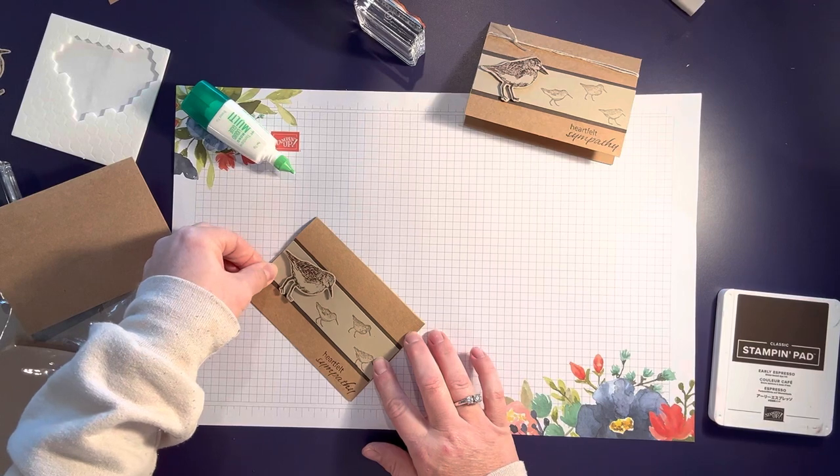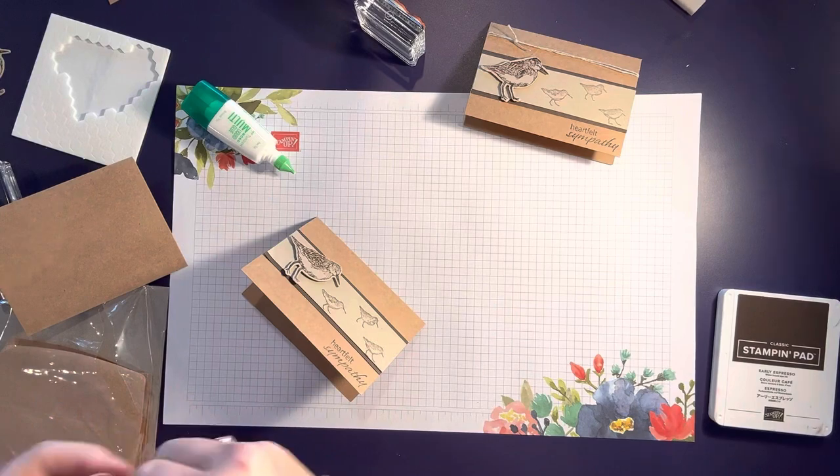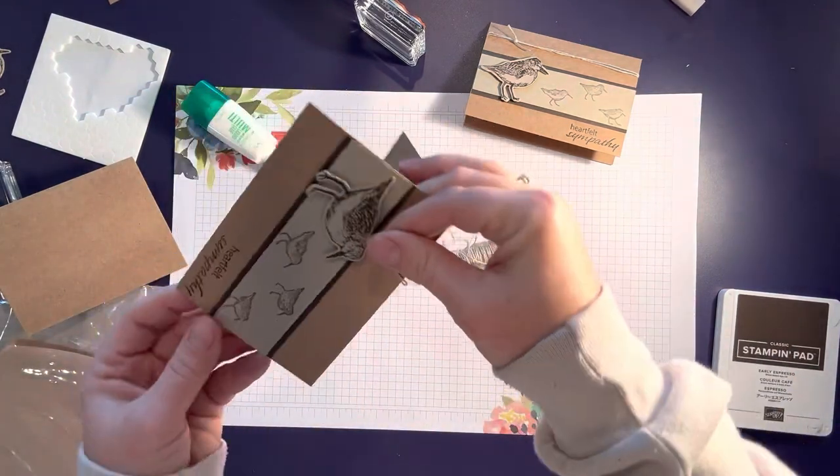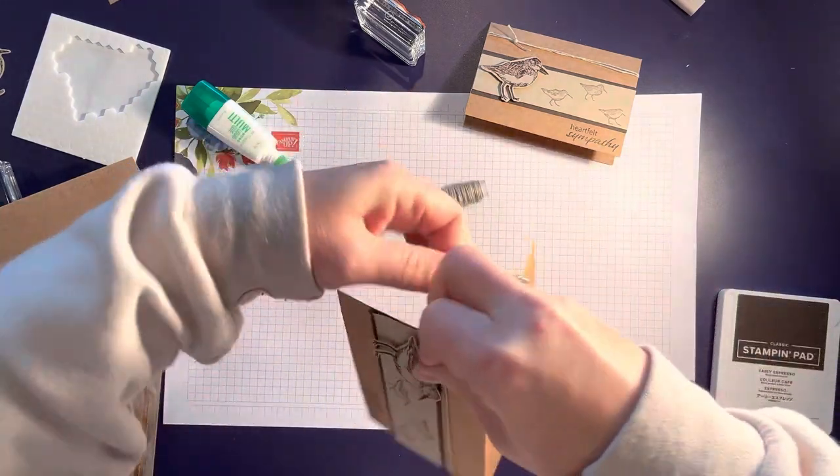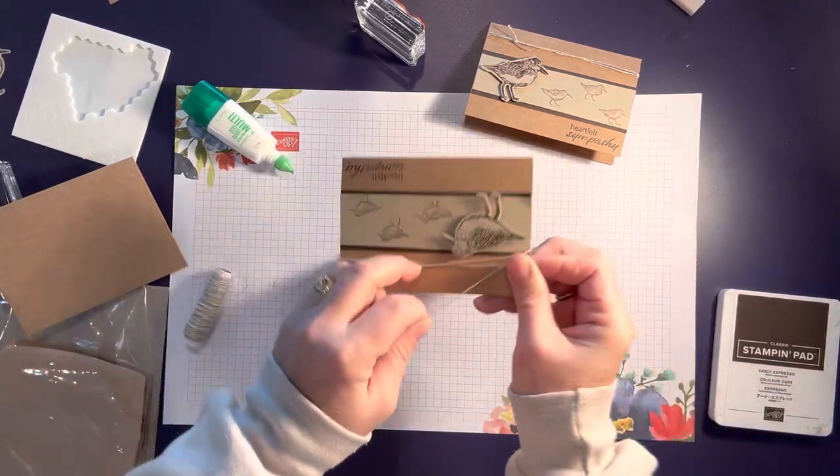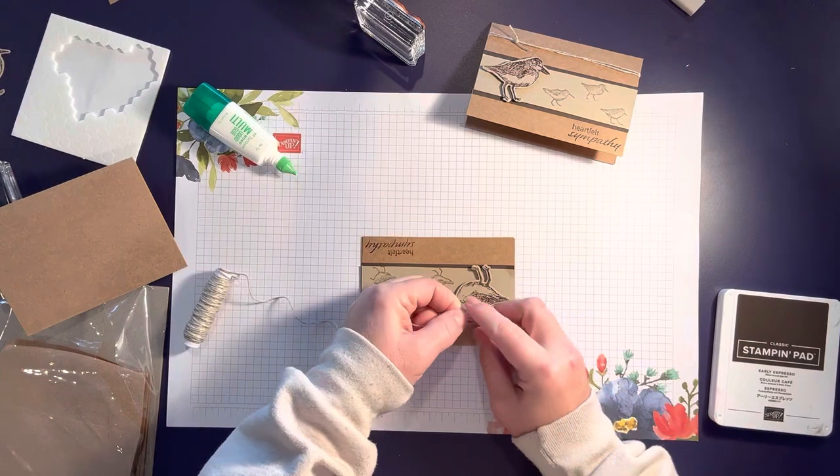Then I'm going to add a little adhesive to the back of this. Then I'm going to finish it with some linen thread around the top. I go through lots of the linen thread. It is just such a nice thing to add on to cards.